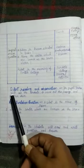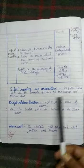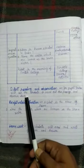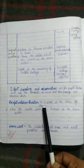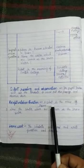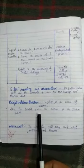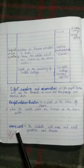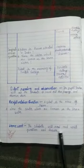Next headline will be written, silent reading and observation. The pupil teacher will ask the students to read out the passage and observe them. And next to it, headline, recapitulation questions. First question, under this headline, what is the name of the lesson? Next, name the states which are known as the Seven Sisters. Last headline of this file, homework. We write here, the students will read and write question and answer.